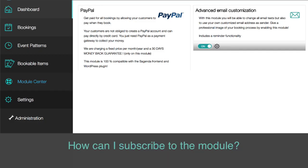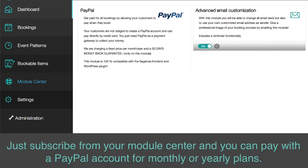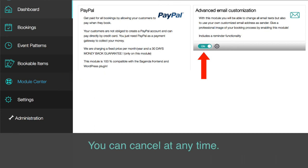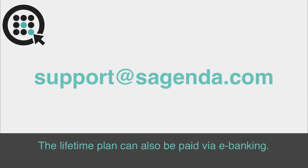How can I subscribe to the module? Want those awesome features? Just subscribe from your module center, and you can pay with a PayPal account for monthly or yearly plans. You can cancel at any time. There's also a lifetime plan which is the best value if you use it for several years. The lifetime plan can also be paid via e-banking.